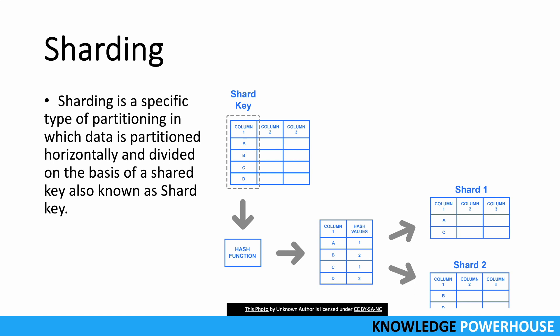In sharding, we have a specific type of partitioning. Sharding is also known as horizontal partitioning, but it goes a bit beyond that. In sharding, we divide the data horizontally on the basis of a key — that key is shared across the partitions and is known as the shard key. For example, with a table where column one has values a, b, c, d, we apply a hash function: a and c go to shard one, and b and d go to shard two.